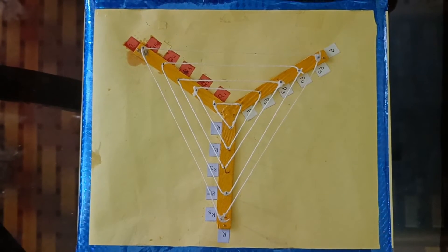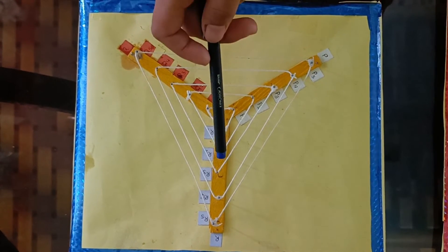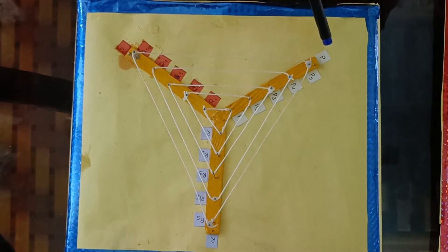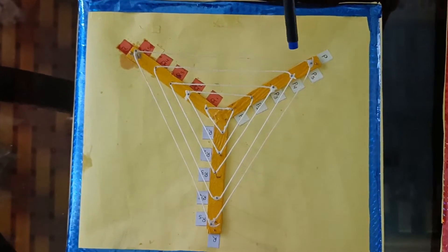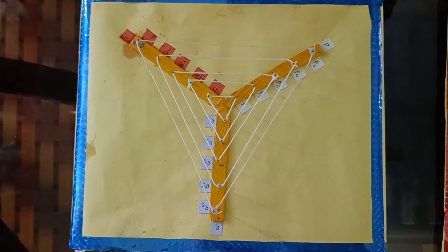To demonstrate this activity, we have made an assembled model with the help of three wooden strips. Here we have taken three wooden strips P, Q, and R, and joined three ends of each strip such that it forms a Y-shape.